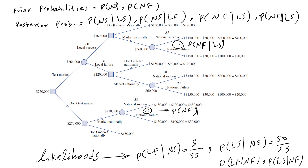As I said in the previous video, the only reason we use Bayes is because some of the probabilities we need to complete the decision tree are not given to us. We have four types of probabilities in decision trees. The first are called prior probabilities — the probability of the states of the world. For example, 45% is the probability of national failure and 55% is the probability of national success. These two are called prior probabilities.